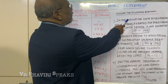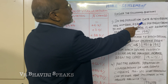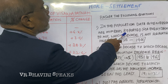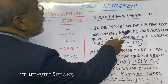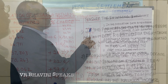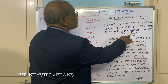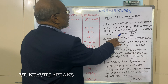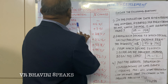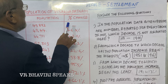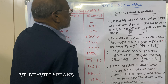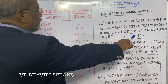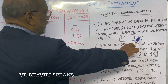Question number one: in the population data given, are numbers reported for every decade? If not, which decade is not reported? The answer is no. The 1901 percentage change was not given. So the decade not reported is 1901.